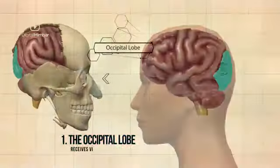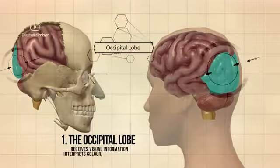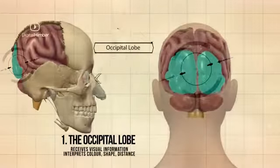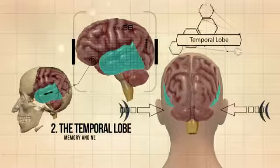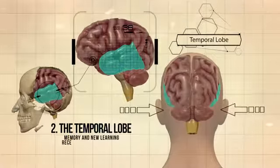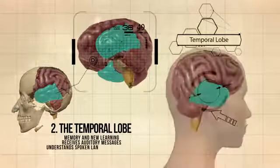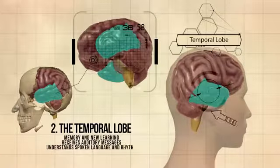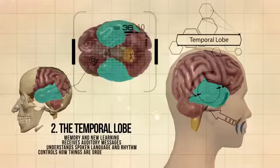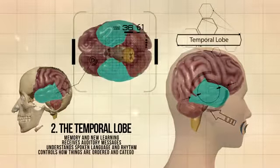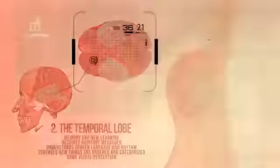The occipital lobe receives visual information and interprets colour, shape, and distance. The temporal lobe is responsible for memory and new learning, receives auditory messages, understands spoken language and rhythm, and controls how things are ordered and categorised, as well as some visual perception.